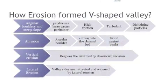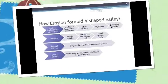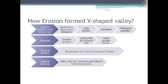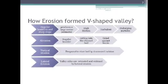How does erosion form a V-shaped valley? Angular boulders and steep slope produce a large wetted perimeter and high friction, and turbulence helps in dislodging particles and increases erosion. Abrasion: angular boulders cutting into the channel bed and grinding against the banks. Vertical erosion helps deepen the river bed by downward incision. Lateral erosion also takes place.